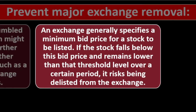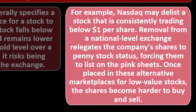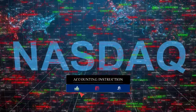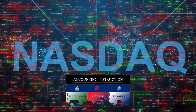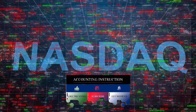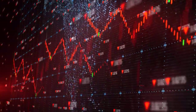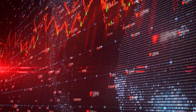An exchange generally specifies a minimum bid price for a stock to be listed. If the stock falls below this threshold over a certain period, it risks being delisted. For example, NASDAQ may delist a stock that is consistently trading below $1 per share. Removal from a national exchange relegates the company's shares to penny stock status, forcing them to list on the pink sheets, where there is far less regulatory scrutiny, requiring investors to do much more of their own homework. Companies on exchanges generally have more investor trust because they must meet regulatory requirements.